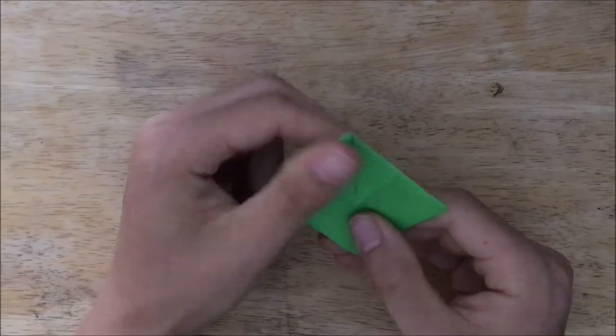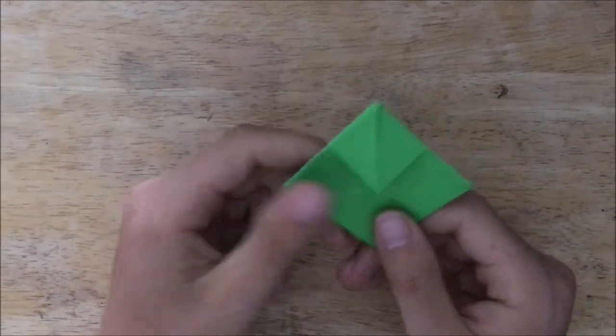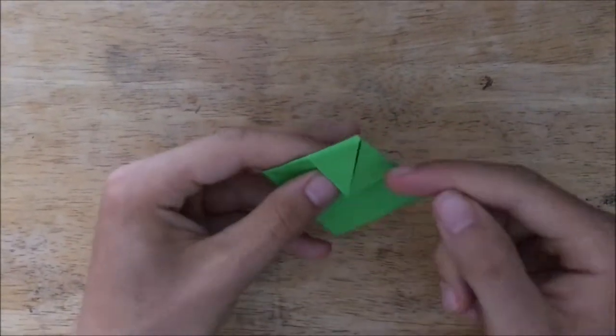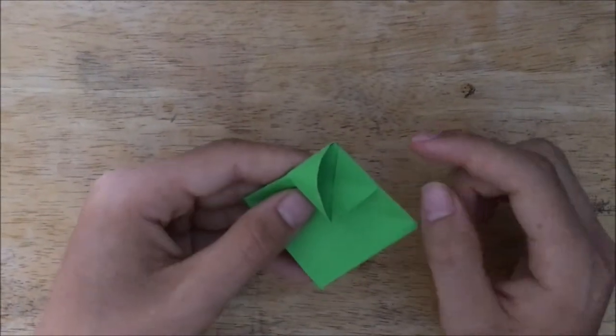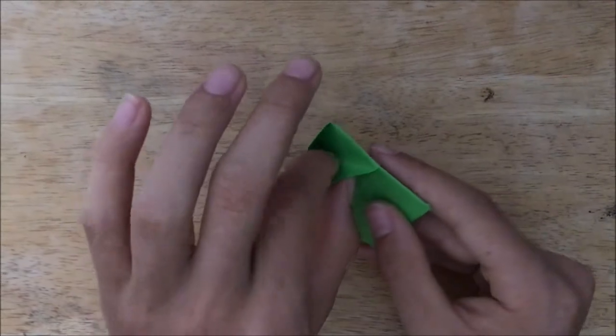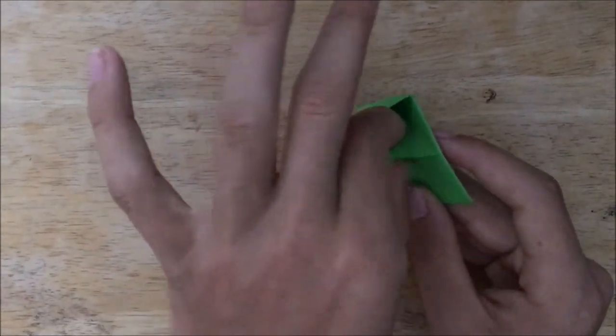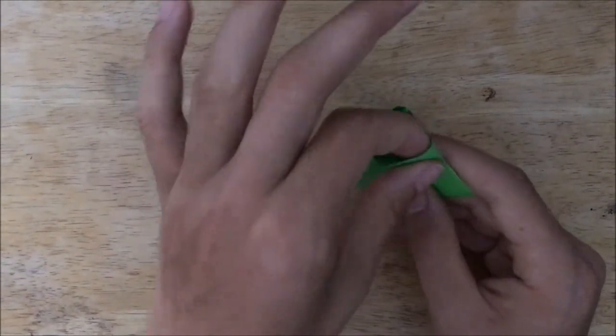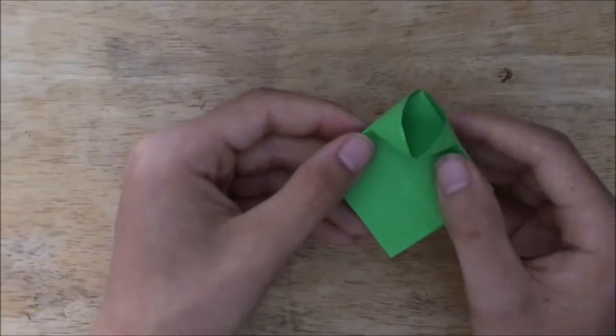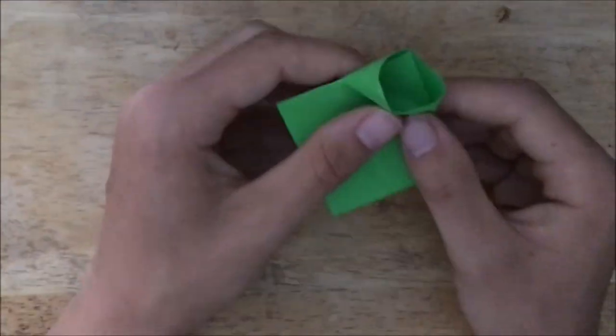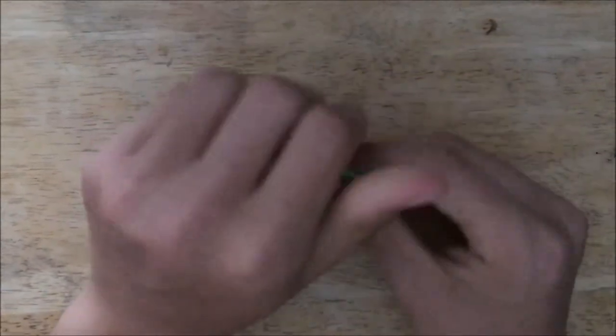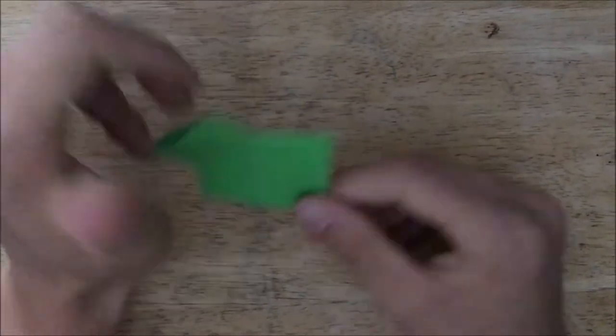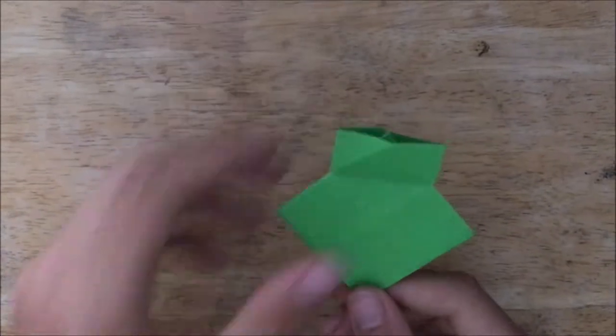And you should have this little flap here. What you want to do with this is put your finger in one of the sides to open it up like that, and open the other side up as best you can like that, and push down to make a crease. Now your paper should look like this.